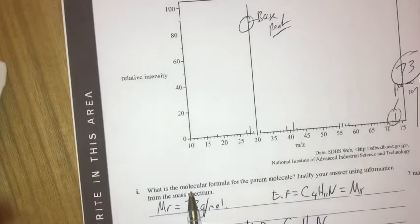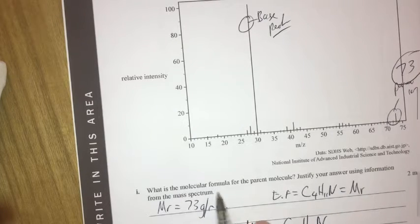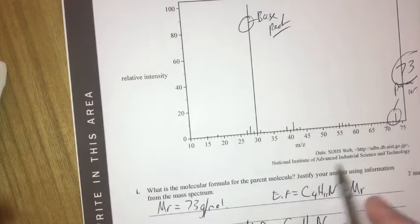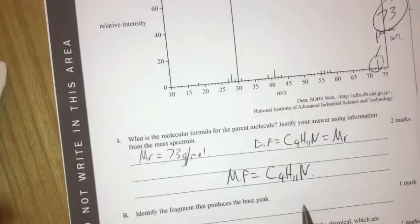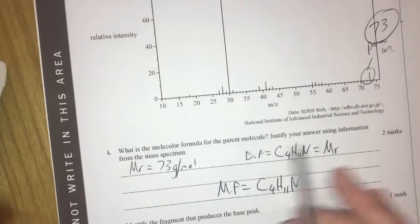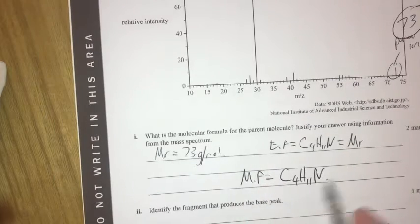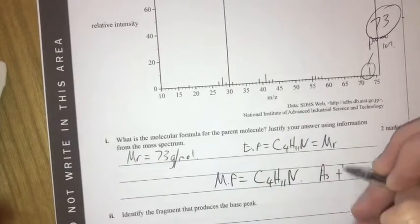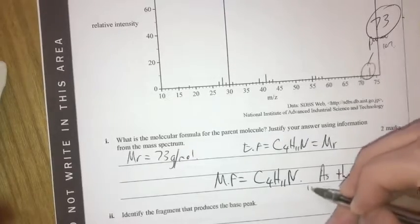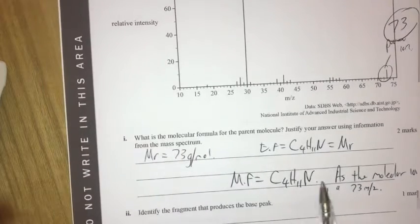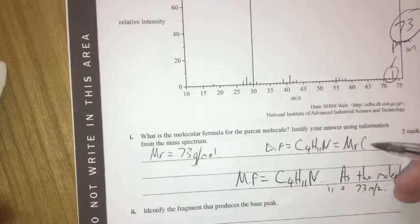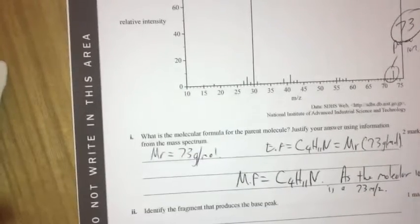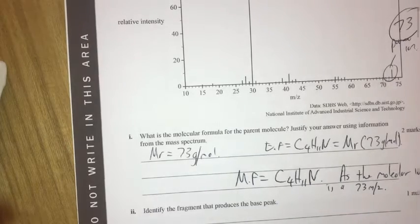Therefore our molecular formula equals C4H11N. It's important to note we want the molecular formula, not the ion, so it doesn't carry a charge. To justify: the molecular ion is at m/z 73, and the empirical formula C4H11N gives a molar mass of 73 g/mol — so the molecular formula is confirmed.